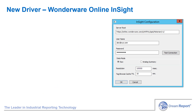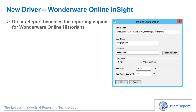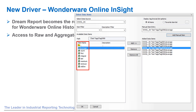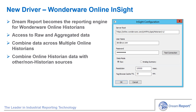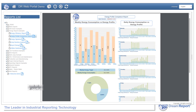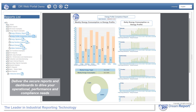With our new driver for Wonderware's cloud-based online historian, DreamReport becomes the online historian reporting engine to augment the Wonderware Insight web-based analytics tools. DreamReport already includes a driver supporting the OData protocol for online historian-based alarms. The new driver exposes both raw and aggregated or summary data from the online historian. The additional benefits of using DreamReport as the reporting engine for online historians is that you can connect to multiple online historians simultaneously, and combine data across historians in a single report, and even combine data from an online historian with non-online historian data sources like alarm logs, SQL databases, batching systems, and the like. This really allows you to harness the power of a cloud-based historian, along with on-premise data sources, to contextualize your data and drive your operational performance and compliance requirements.